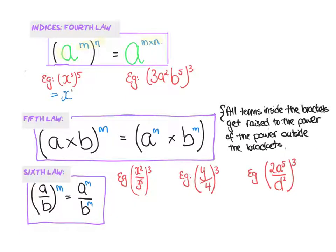Now we've got to be careful with this one here. Everything inside the bracket, every power, will get times by three. So we have to remember that three has an index of one, so it'll be three to the power of three. Now a, two times three is six, and b, five times three is fifteen.